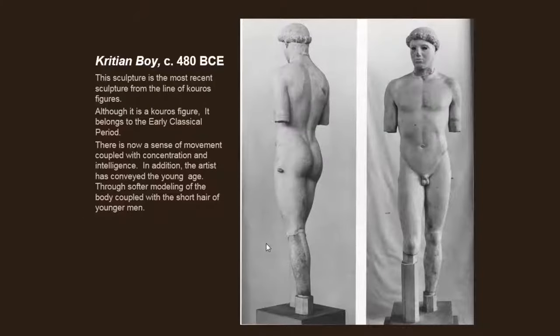The last thing I want to say about the Critian Boy is: if you place him next to the early Kouros figures — the New York Kouros, for example — you can see side by side that all of a sudden this becomes a great deal more animated. He's stepping farther forward, the archaic smile is gone. There's the expression of a young man, and the figure is softly modeled. We have a better idea of exactly how old he is. It's moved from a quintessential all-human to almost a specific portrait — perhaps it really is a portrait of a specific person.